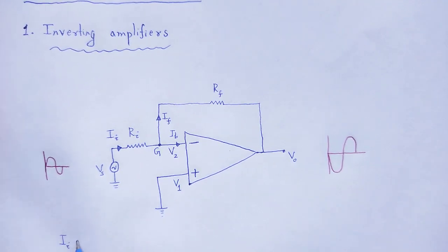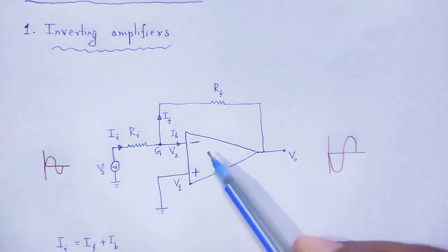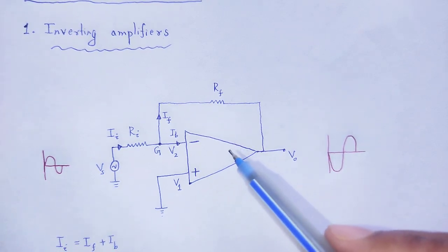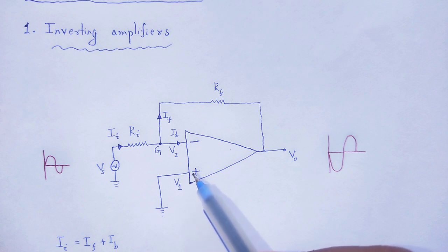Ii is equal to If plus Ib. Look here, we know in case of an ideal op-amp, the input impedance is infinity, so no current flows through that of the op-amp.